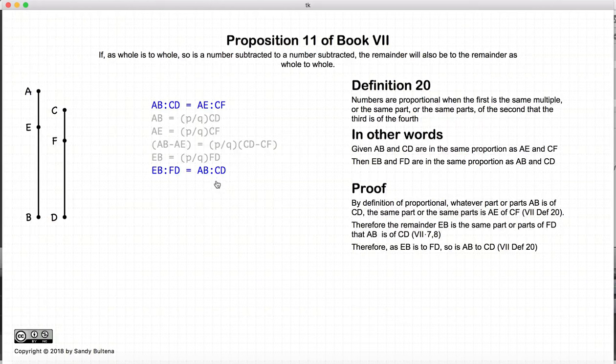And this here is what the proposition is stating. If AB to CD is the same proportion as AE to CF, and if we subtract AE from AB and CF from CD, the result, EB to FD will be in the same proportion as the original AB to CD.